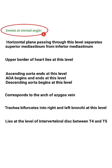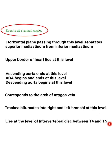Events at the sternal angle: The horizontal plane passing through this level separates the superior mediastinum from the inferior mediastinum. The upper border of the heart lies at this level. The ascending aorta ends, and the arch of aorta begins and ends at this level. The descending aorta begins at this level. It corresponds to the arch of azygos vein. The trachea bifurcates into the right and left bronchi at this level. It lies at the level of the intervertebral disc between T4 and T5 vertebrae.